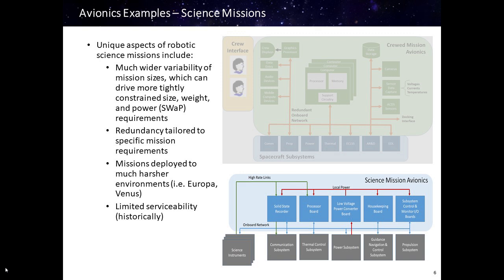You'll also see redundancy tailored to specific mission requirements, where some less critical missions may employ just single-string avionics while more critical flagship missions may have fully redundant cross-strapped avionic systems. Science missions may also be deployed to harsher environments, including extreme environments such as Europa and the surface of Venus. Historically there has been limited serviceability of science mission avionics, although that could change as robotic servicing technologies increase in the future.